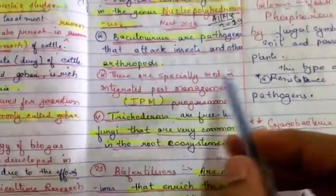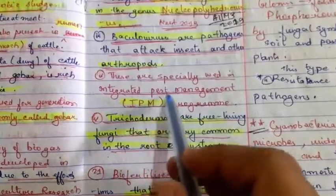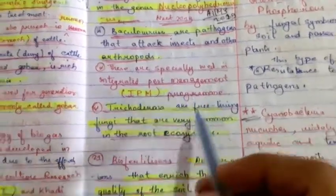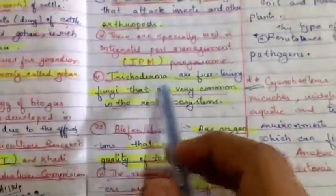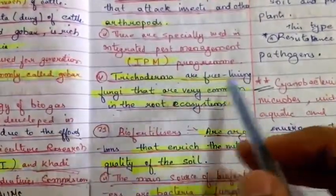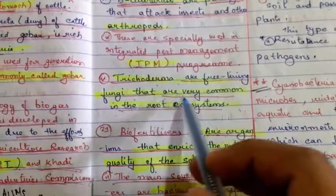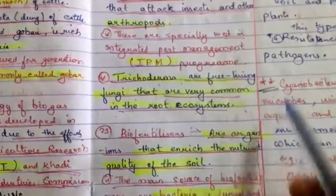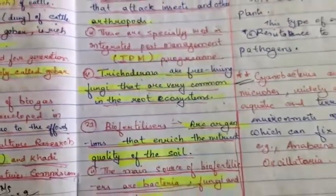Baculoviruses are especially used in integrated pest management (IPM) programs. Trichoderma are free-living fungi that are very common in the root ecosystem.